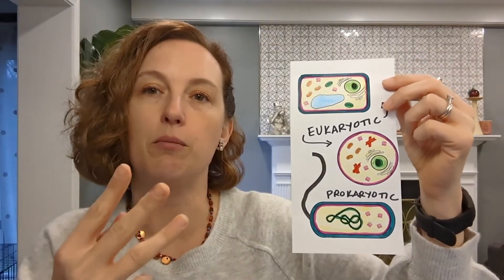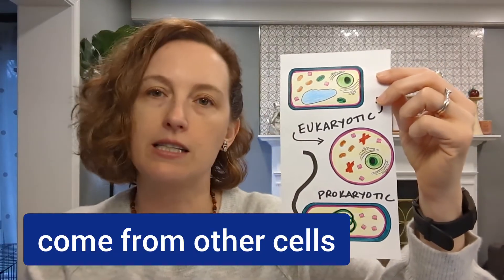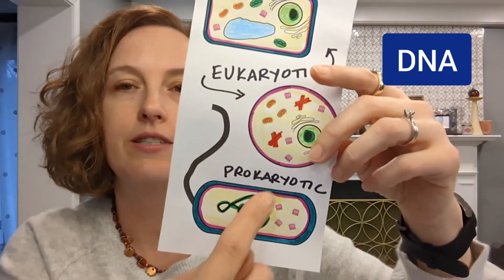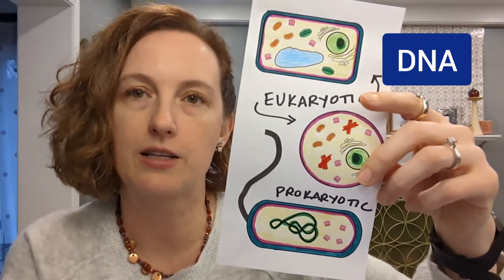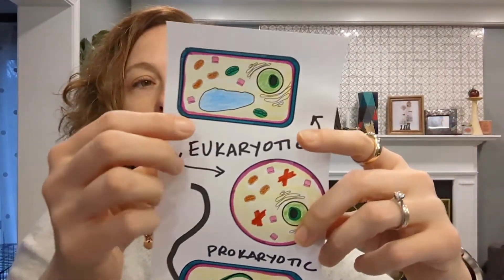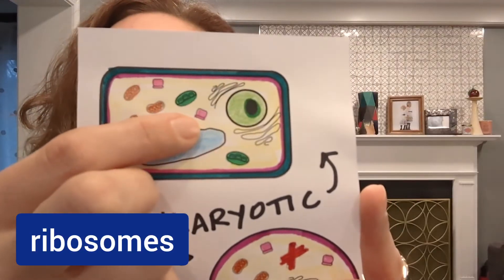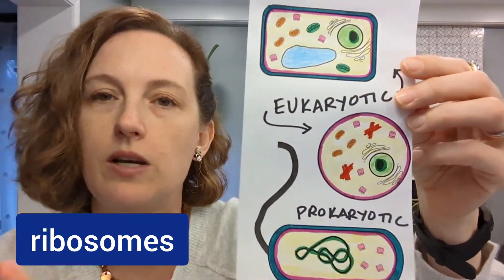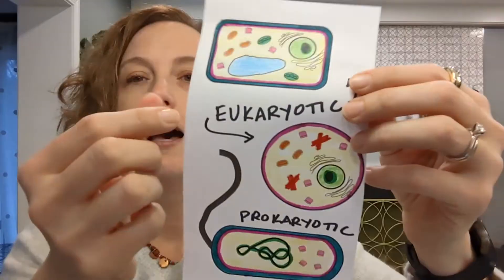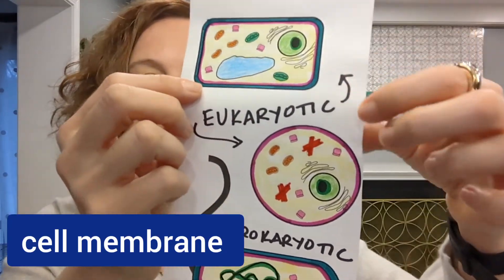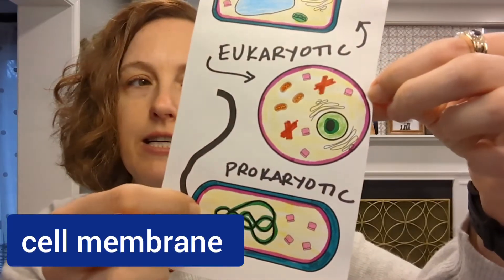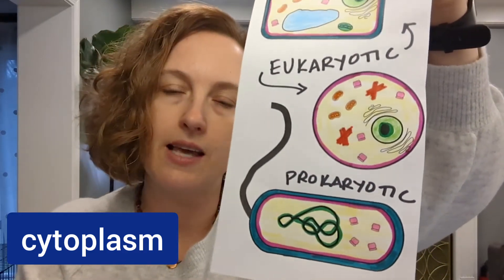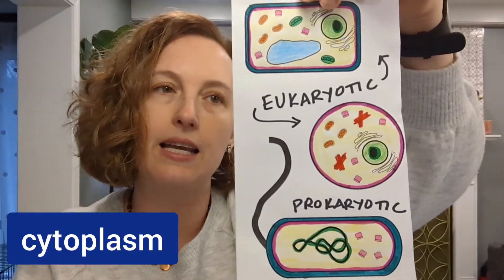Number three is that all cells come from other cells — all cells have a parent cell that they divided from. Another thing they have in common is all cells have DNA, whether it's in the nucleus or not. They also all have ribosomes; in my diagram they look almost like tiny old-fashioned computers and I colored them pink. All cells need ribosomes to make proteins, and cells are protein machines. They all also have a cell membrane, and finally they all have cytoplasm — a pale yellow fluid that holds all the organelles and helps a cell hold its shape.